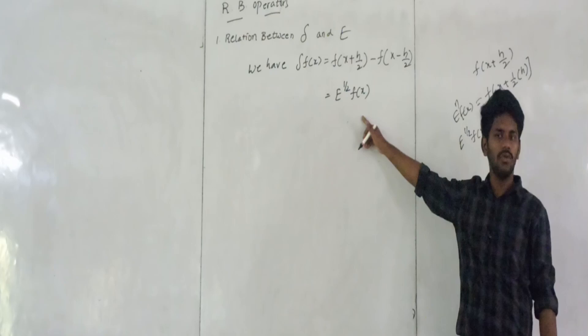The shift operator formula: e to the power of n f of x equals f of x plus n h. Now put n equal to 1 by 2 only. So f of x plus h by 2, that is f of x plus 1 by 2 into h.